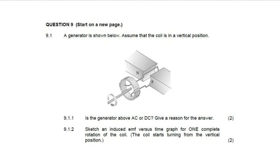The first question says: a generator is shown below, assume that the coil is in a vertical position. If the coil is in a vertical position, that tells you that it doesn't conduct — it should be horizontal so that you can induce the EMF. They ask: is the generator AC or DC? To know that it's DC, you can see there are split rings.